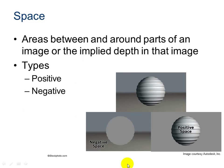Space. Areas between and around parts of an object or image are the implied depth in that image. There are two types of space: positive space and negative space. In the pictures you can see an example of positive space — we appear to see the depth in this area because of the detail on this shape. This is negative space — we get the depth from the surroundings, not from the actual space.